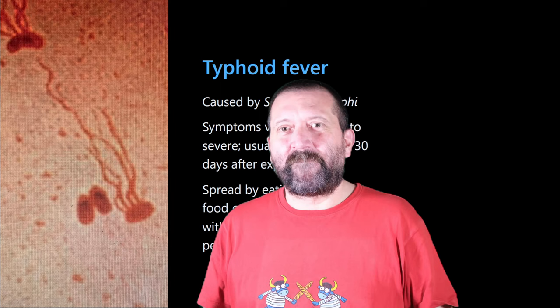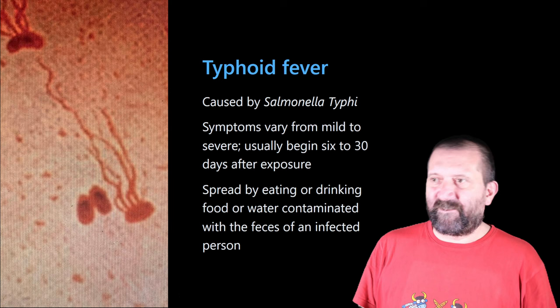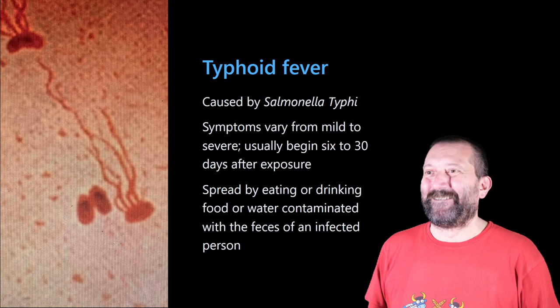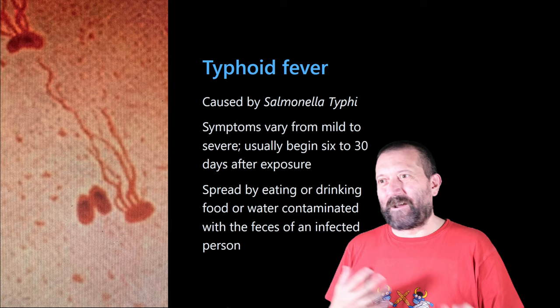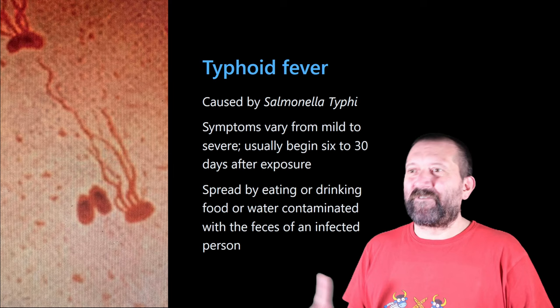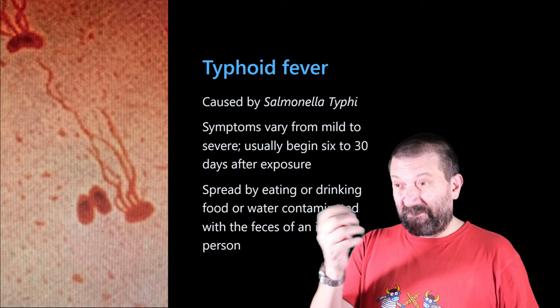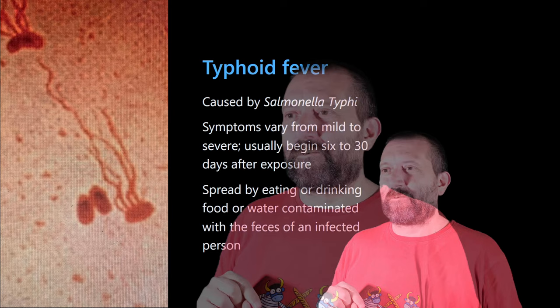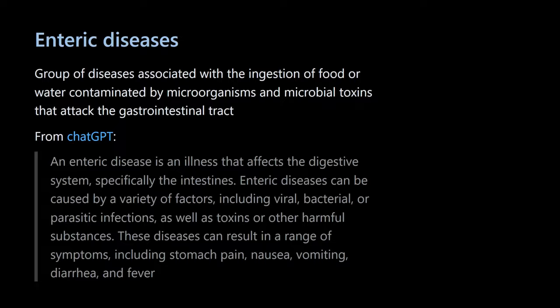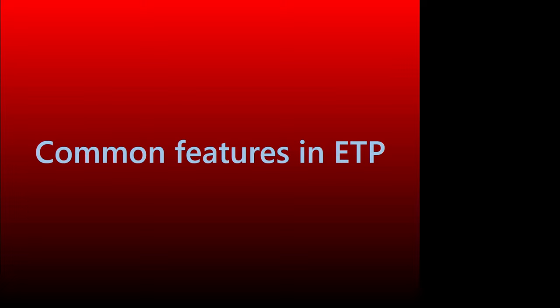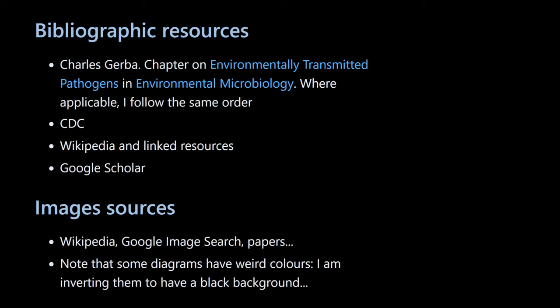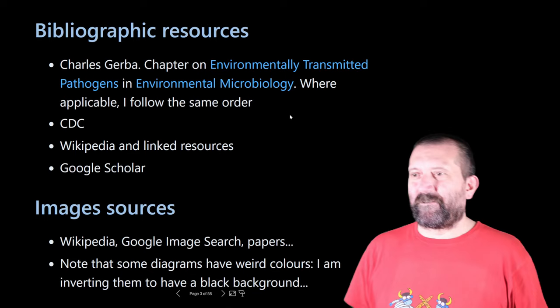One type of Salmonella infection with a different name is typhoid fever, caused by a specific species: Salmonella Typhi. Symptoms vary from mild to severe and usually begin six to thirty days after exposure. I recommend looking at the Gerba chapter, which has tables giving a very nice presentation of different incubation times and time before onset of symptoms for the various pathogens.